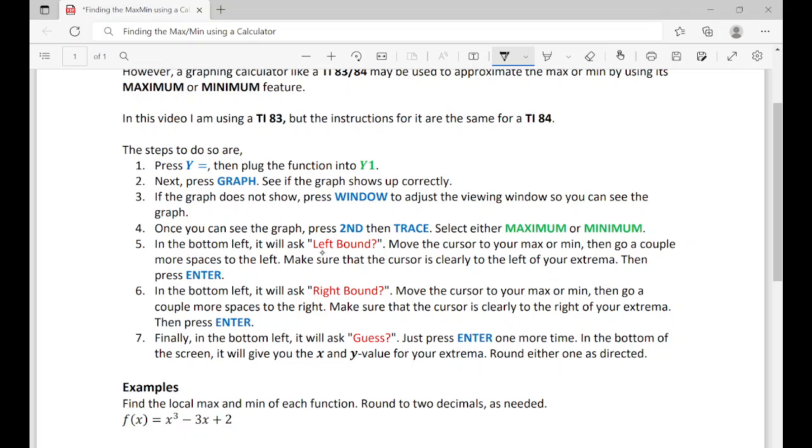In the bottom left, it will ask for the left bound, so that means you're going to move your cursor to the max or the min and then go a couple more spaces to the left. Make sure it's clearly to the left of the extrema and then you're going to press enter.